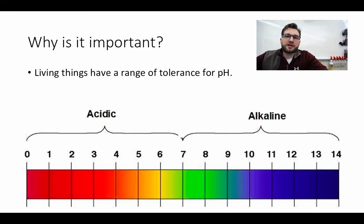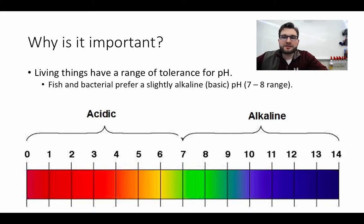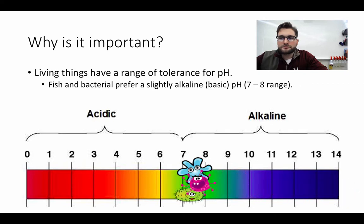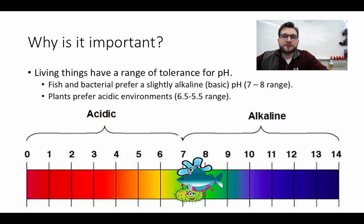The importance of pH: we have many organisms that have a narrow tolerance of pH. Our fish and our bacteria in our system are going to prefer a slightly alkaline system, from a pH of 7 to pH of 8. Our plants, on the other hand, are going to prefer a slightly acidic range from 5.5 to 6.5.